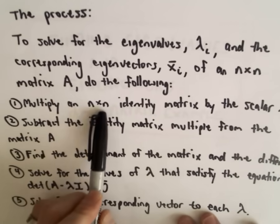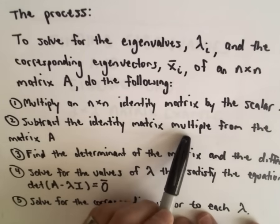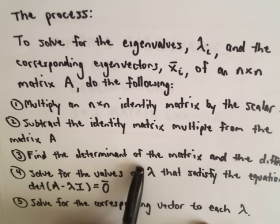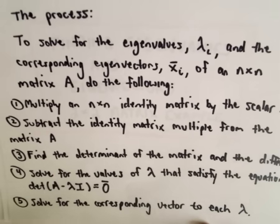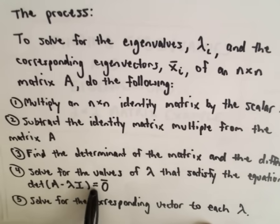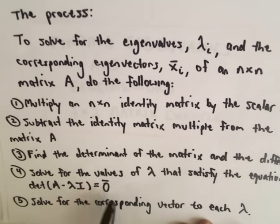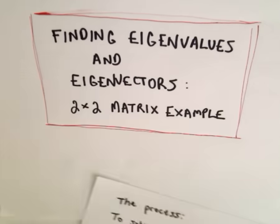The first thing we're going to do is multiply an n by n identity matrix by the scalar lambda. Step 2, subtract that identity matrix multiple from matrix A. Step 3, find the determinant of the matrix difference from step 2. Then in step 4, we solve for the values of lambda that satisfy the equation: the determinant of A minus lambda times the identity matrix equals zero. Once you find the determinant, set it equal to zero and solve. Then we solve for the corresponding eigenvector for each lambda.